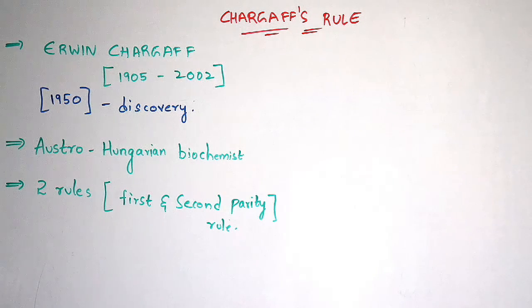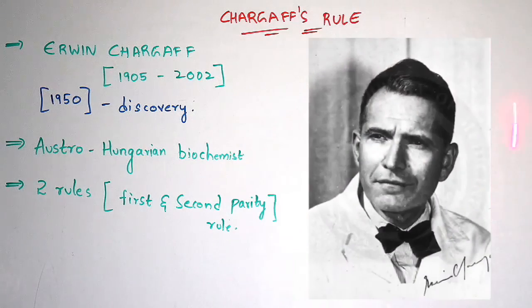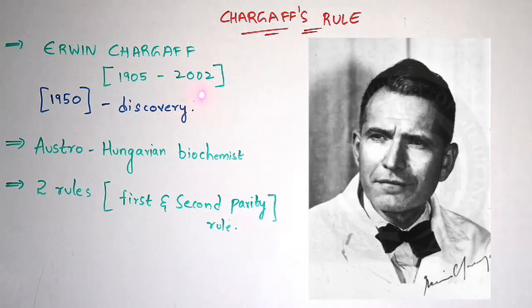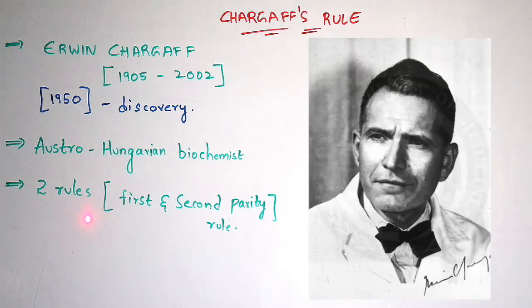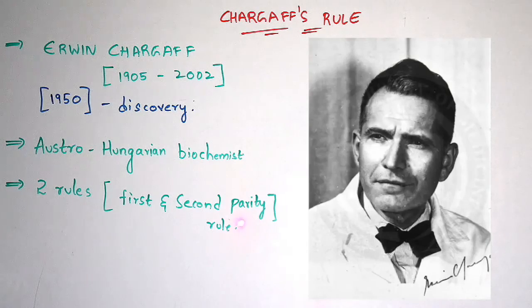Before entering into the topic of Chargaff's rule, you have to know about its discovery. Irving Chargaff was the scientist who discovered this rule. He was born in 1905, died in 2002, and discovered this rule in 1950. He was an Austro-Hungarian biochemist who proposed not one but two rules: the first parity rule and the second parity rule.